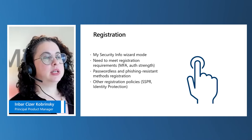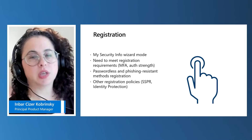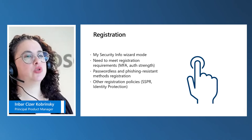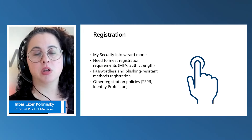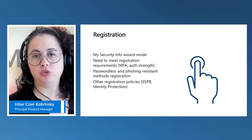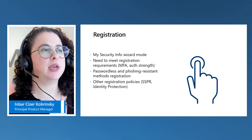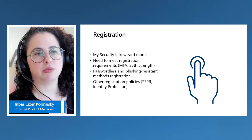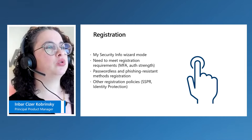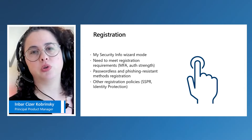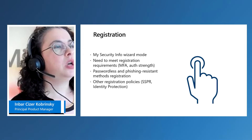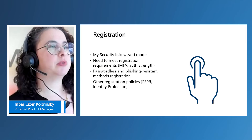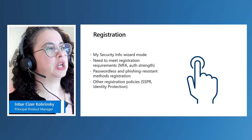The next scenario is the registration chase, which goes back to the question of what happens when the user is not registered for the method. We take them to register the method, and allow them to satisfy the authentication strength after they register. We will take the user to the security info wizard mode, also known as interrupt mode, where the user can click through next, next, and go through the experience of registering multiple authentication methods.